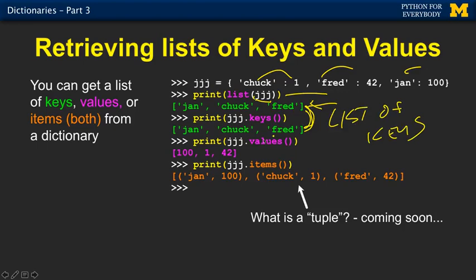Now, if we want the values, we can ask of that too. We have a method inside that's called values, jjj.values. And that says give me a list of the values, and that gives me the values. It pulls out the values 1, 42, and 100. Of course, the order is not the order we put them in, but it turns out that the values do correspond in order to the keys. So whatever the value of the key value pairs are in the dictionary, if you ask for the keys and you ask for the values a moment later, they come out in corresponding order. So Jan maps to 100, Chuck maps to 1, and Fred maps to 42, even though the order is not the same as the order that you originally put them in.